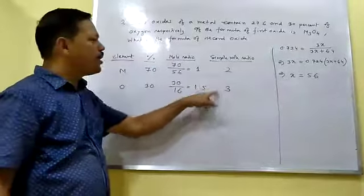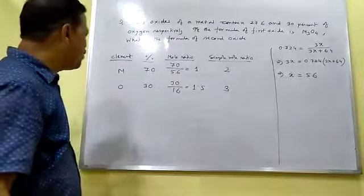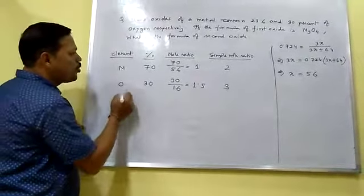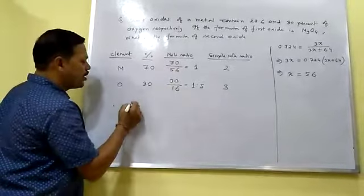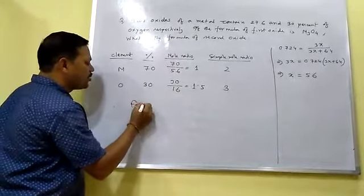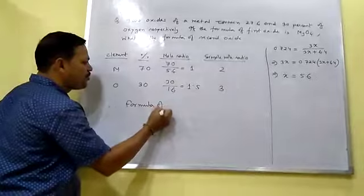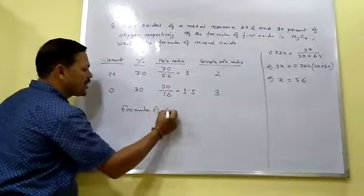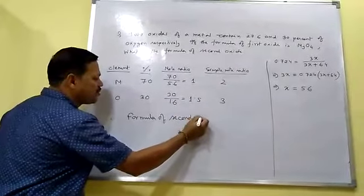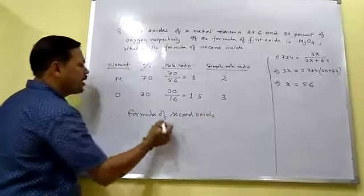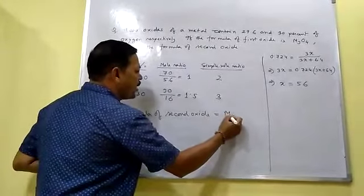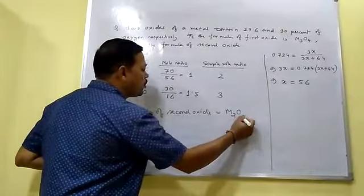After multiplying by 2, you get the whole number ratio of metal to oxygen as 2:3. Therefore, the formula of the second oxide is M₂O₃.